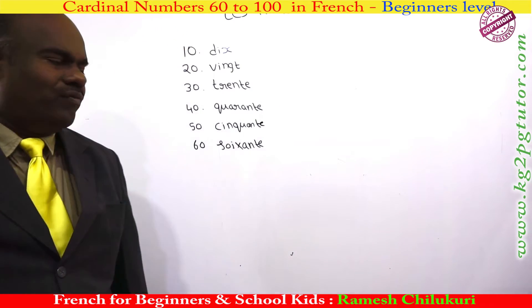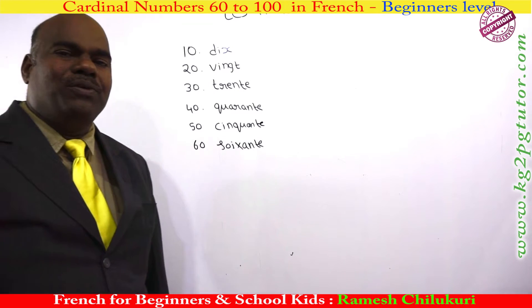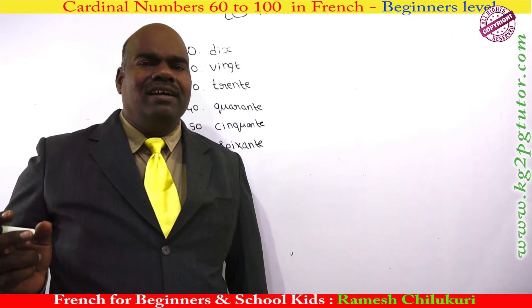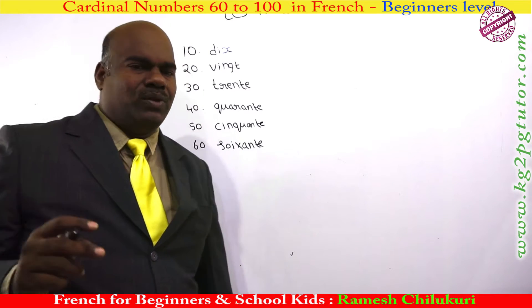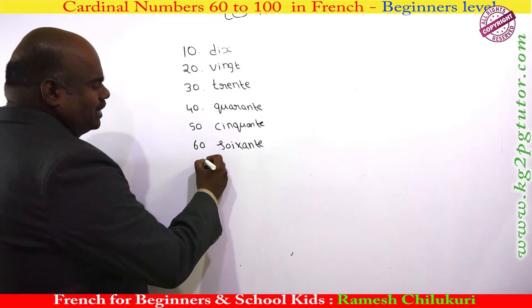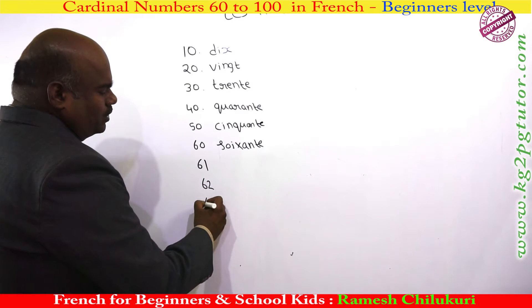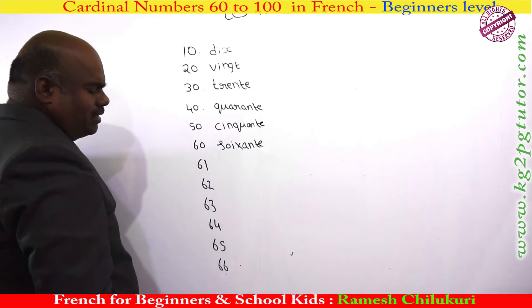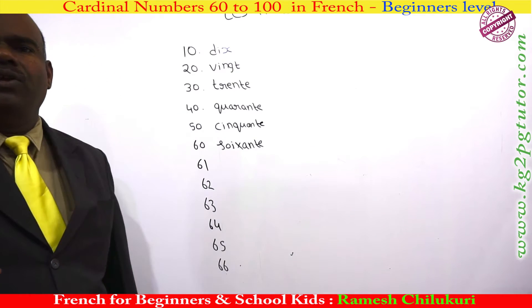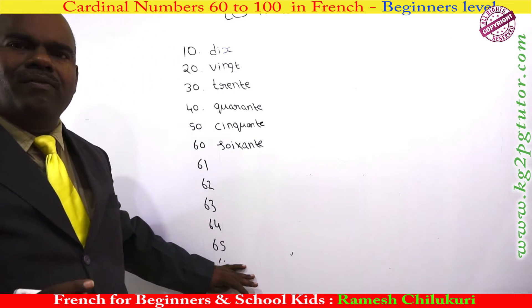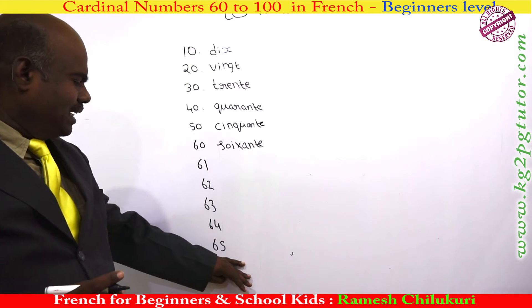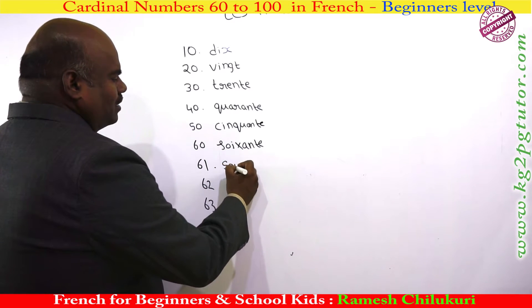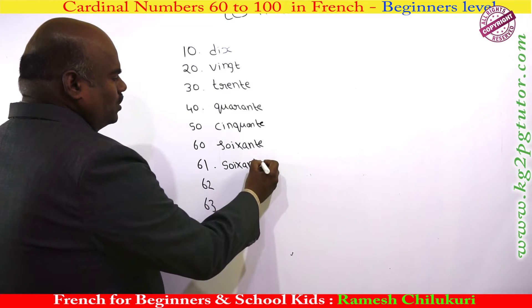After learning up to 60, let me give you the other numbers from 60 to 100. There is a small change in the numbers from 60 to 100. So let us take 61, 62, 63, 64, 65, 66, up to 69 — you can write them in a similar way. As I told you in my previous classes, you can simply write soixante...